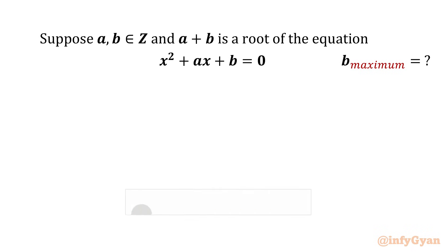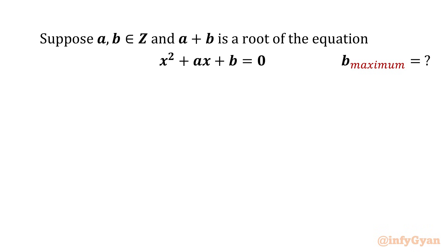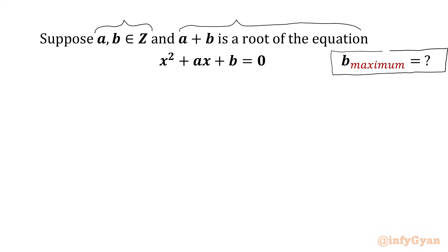Hello friends. Welcome to Infigyan. Today in this video we are going to solve one very interesting question from quadratics. This question is from PRMO 2018, problem number 9. We have one quadratic equation x² + ax + b = 0. Given that a and b are integers, a + b is a root of the quadratic equation, and we need to find the maximum possible value of b.